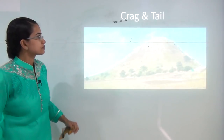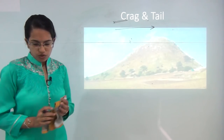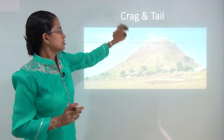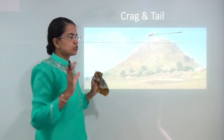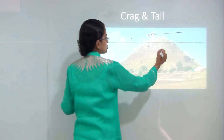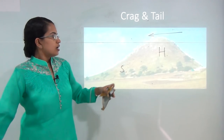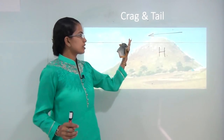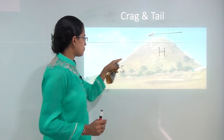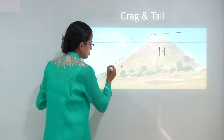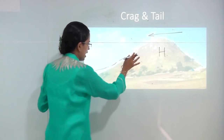Crag and tail is due to the formation of differential erosion. You have a hard rock mass and a soft rock mass. The glacier moves in one direction — the hard rock stands along, while the soft rock tends to erode down, with movement of soft rock debris. This feature is of the shape of a crag with a tail and is overall known as crag and tail.